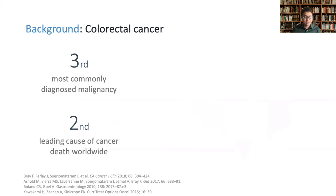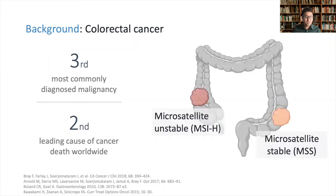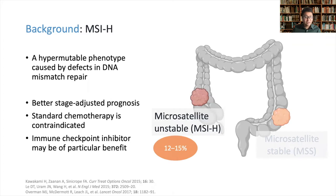Colorectal cancer is the third most commonly diagnosed malignancy and the second leading cause of cancer deaths worldwide. This cancer can be categorized into two distinct subtypes called MSI-HI and MSS. MSI-HI is a hypermutable phenotype caused by impairment of DNA mismatch repair that affects 12% to 15% of patients. Patients with MSI-HI cancers have a better stage-adjusted prognosis, and the treatment strategy is quite different from those with MSS cancers.